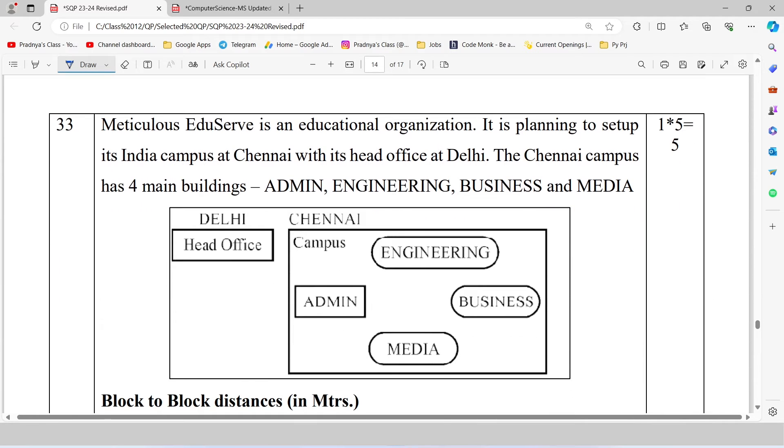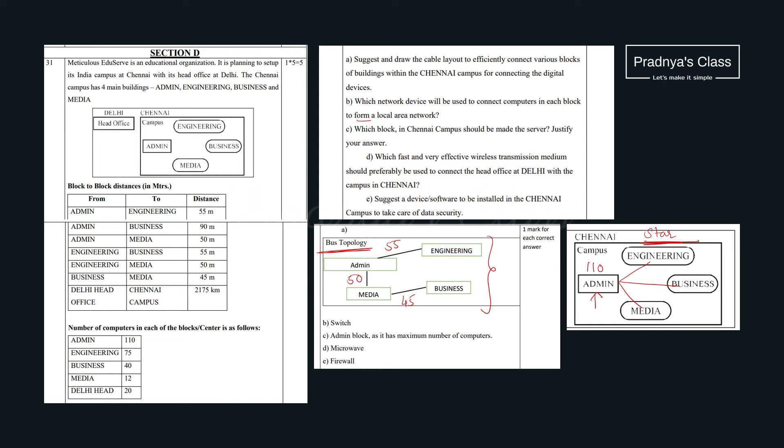Here you will get one question for five marks. It is a case study based question. Read the question carefully. There is an educational organization named Meticulous. It has head office in Delhi and there are four other campuses in Chennai. In the following table we have the distance between block to block. And there is one more table in which we have total number of computers in each block. Now let's read the instructions carefully.